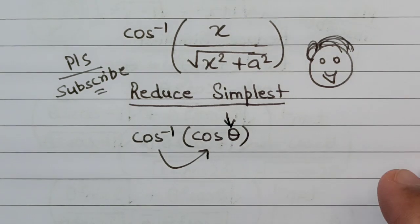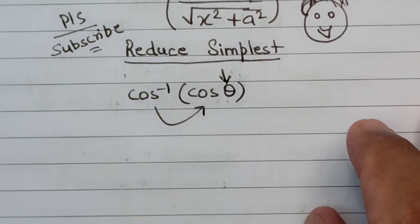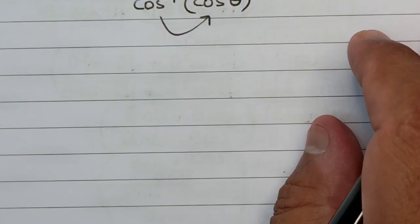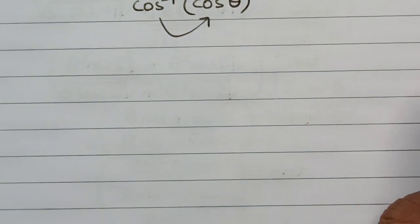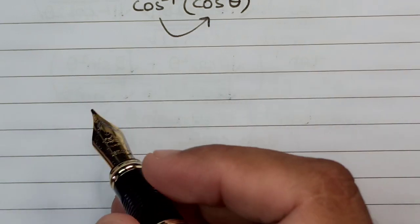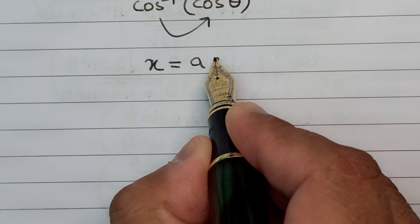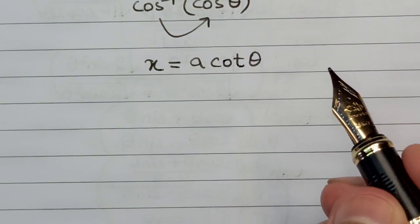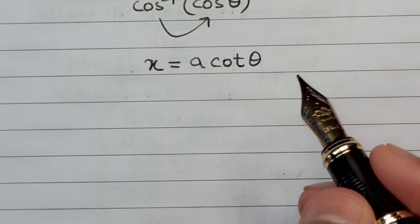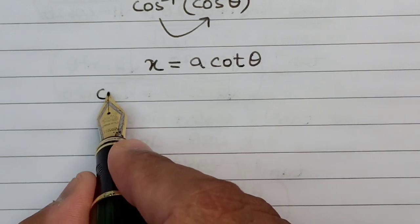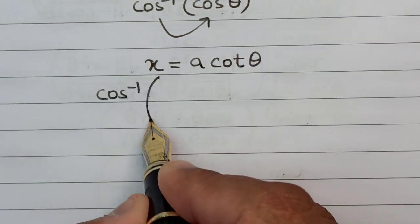So this is the approach that we will be starting this question with. For that we'll have to substitute the value of x in terms of θ, and the very best possible alternative that we can have is x = a cot θ. So as soon as we substitute the value of x as a cot θ, let us see what magic happens.